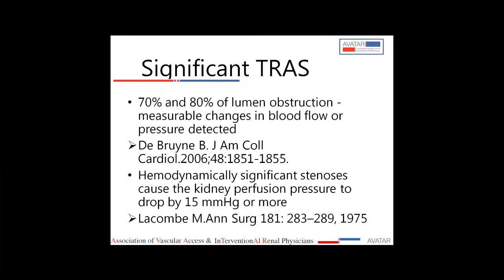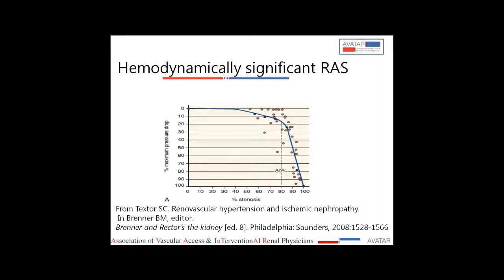Catheterization studies have shown that only when the pressure gradient across the stenosis is more than 15 mmHg do you need to intervene; otherwise, intervention is not needed. As shown in the diagram using latex cast experiments, only when the stenosis is beyond 70% is there a rapid drop in perfusion pressure to the kidneys, resulting in activation of the renin-angiotensin system.